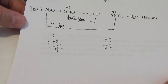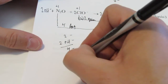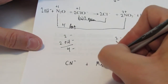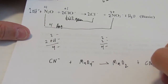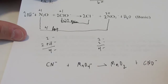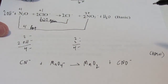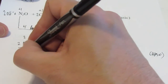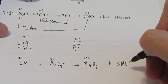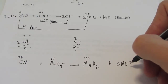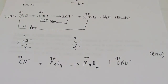Let's do one more — another basic solution. We have CN⁻ and the permanganate ion reacting to form MnO₂ and CNO⁻. Assigning oxidation numbers: CN⁻ gives carbon 2⁺. Manganese is 7⁺ on the reactant side and 4⁺ on the product side. Carbon on the product side in CNO⁻ is 4⁺. Manganese and carbons are already balanced one-to-one.